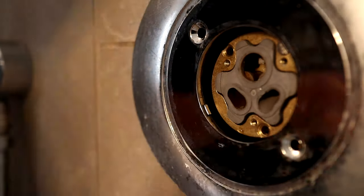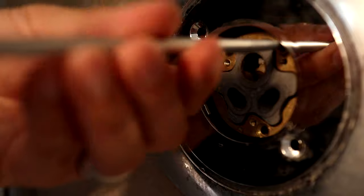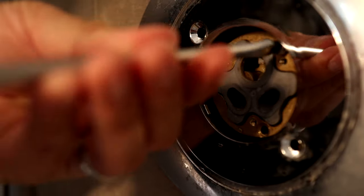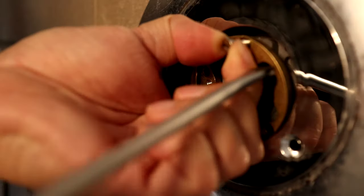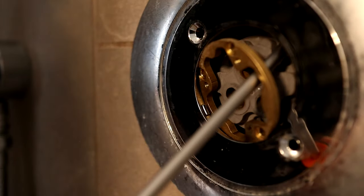You may want to take a picture of this first so you can remember the orientation of all the holes. The round hole is positioned at the top center. When it's freed, be careful you don't drop the retaining ring inside the wall.